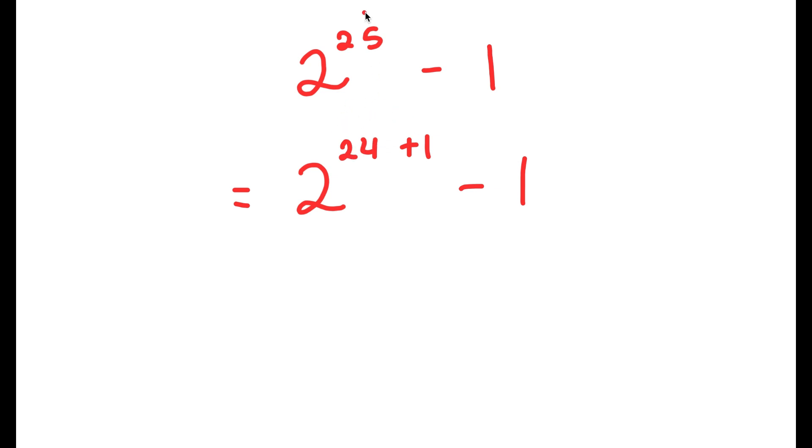The reason I'm doing this and rewriting 25 as 24 plus 1 is so now I can use the property a to the power of m plus n is equal to a to the power of m times a to the power of n.